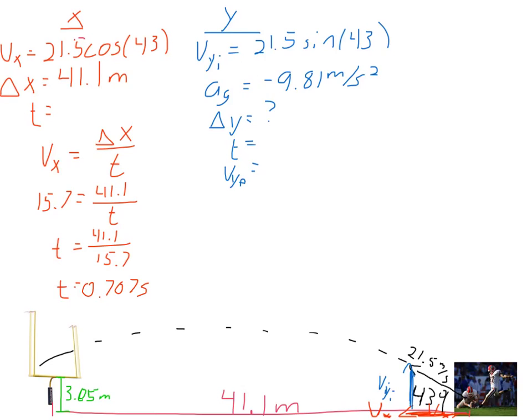So that's how long the ball is in the air whenever it gets to the field goal. Now hopefully it's going to pass over the top field goal bar. So now let's take that T and we can plug it in for time over here. So I can use that time now in the Y axis seconds. Pick an equation that will work for you. It's going to be our favorite. Delta Y equals VIT plus 1 half AT squared. Let's go ahead and figure out what our 21.5 sine 43 is. It comes out to be 14.66 and then we pick an equation.